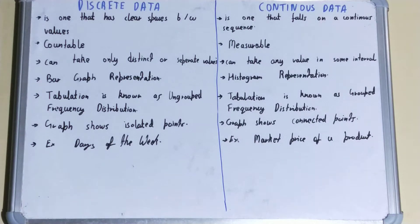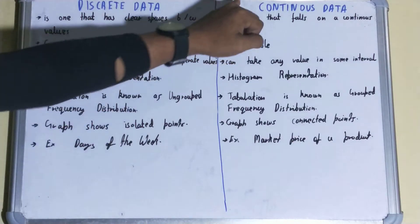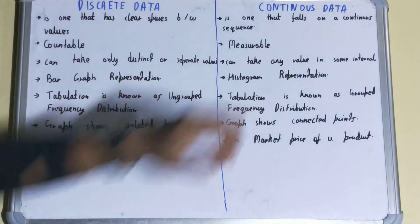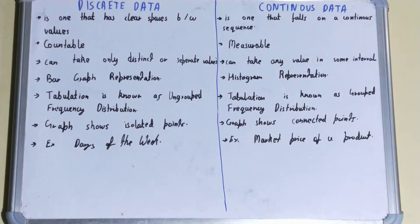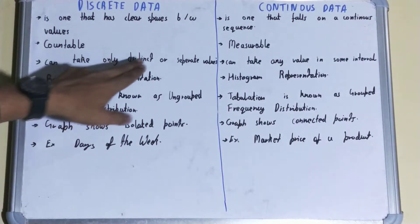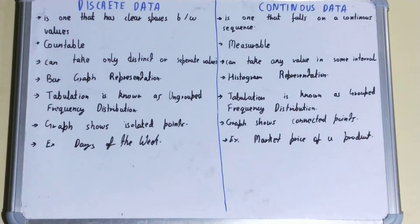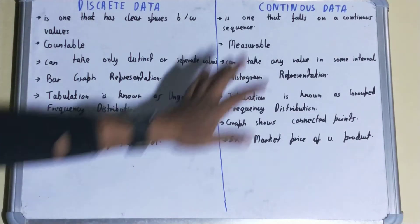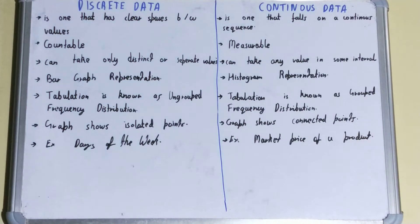In terms of nature, discrete data is countable, while continuous data is measurable. Regarding values, discrete data can take only distinct or separate values that are not interconnected and have no matching data between them, whereas continuous data can take any value within some interval.